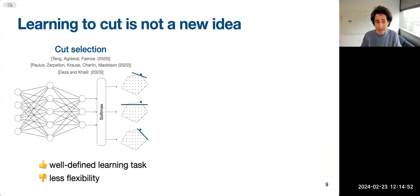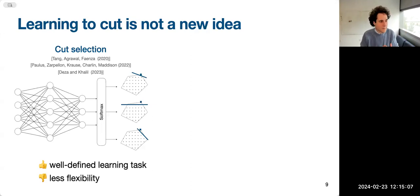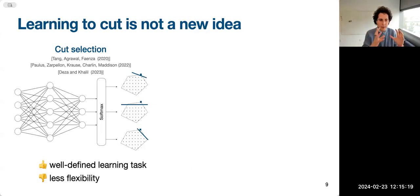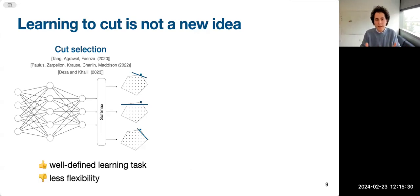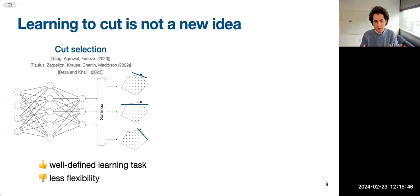So why not try to learn something about how cutting planes work for a specific family of instances? This is not a new idea — there's a lot of work in this area. The cut selection problem is the problem of predicting, from the state of the algorithm, a ranking between different cutting plane options to pick the best one for the next step. These are well-defined learning tasks with a clear loss function, trained so that at runtime you predict the cuts that work best.